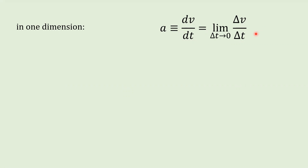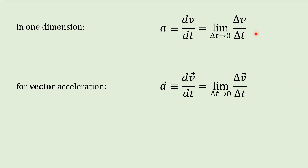Recall in one-dimensional kinematics, we defined acceleration as the instantaneous rate of change of velocity — it's change in velocity over change in time in the limit as delta t goes to zero. There are no vector quantities here per se; this is just a number over a number. Can we turn this into a vector definition? How do we generalize that?